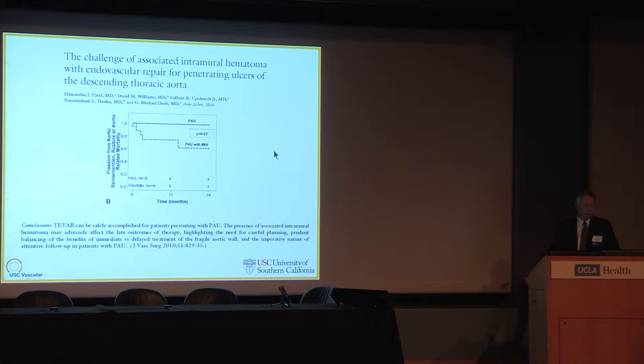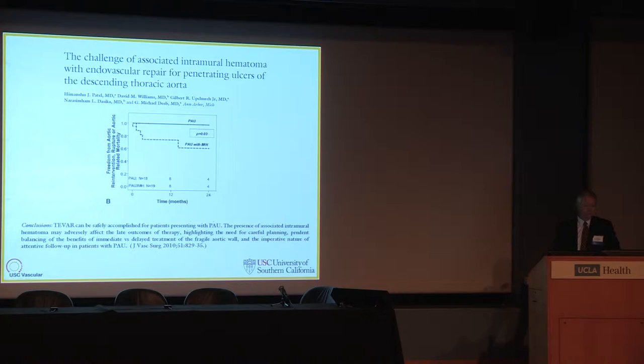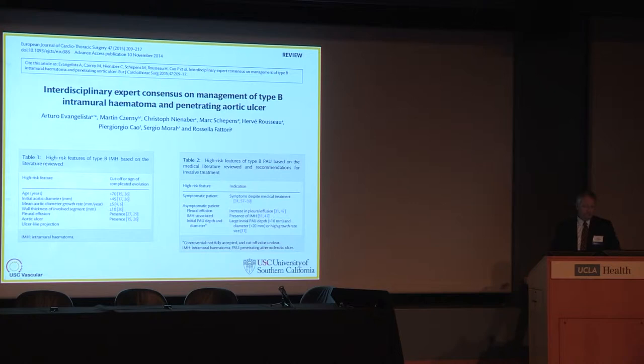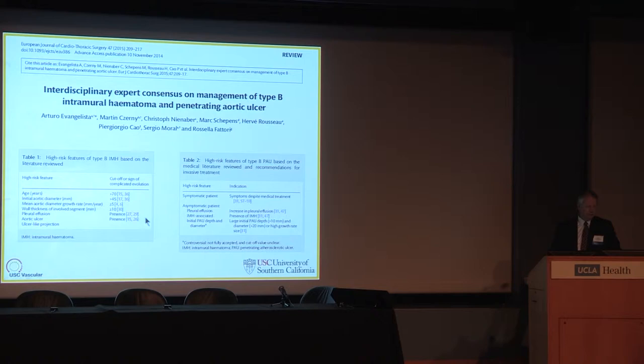A study out of Michigan shows that the natural history of a pure penetrating aortic ulcer versus one associated with intramural hematoma is significantly different. Our European colleagues put together an interdisciplinary panel and found high-risk features for type B intramural hematomas: age greater than 70, initial aortic diameter greater than 45 mm, growth of greater than 5 millimeters, wall thickness, aortic ulcer presence, and ulcer-like projections.